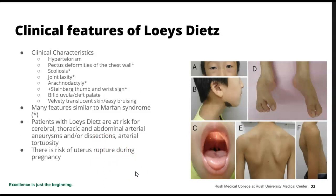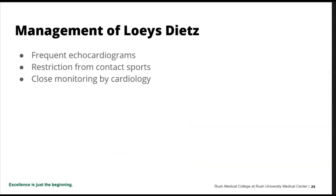Patients with Loeys-Dietz are at risk of cerebral, thoracic, and abdominal aneurysms, dissections, and tortuous arteries. There is also a very high risk of uterine rupture during pregnancy. To me, the two scariest connective tissue disorders are Loeys-Dietz and EDS type 4 — I know many 70-year-olds with Marfan syndrome, but not many with Loeys-Dietz or EDS type 4. Management includes frequent echocardiograms, restriction of contact sports, and close monitoring by cardiology.